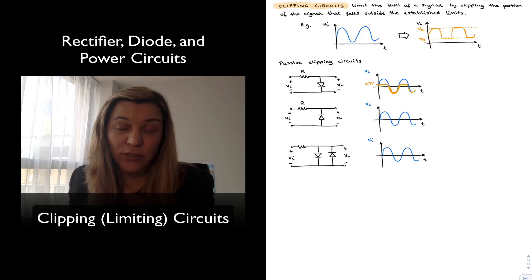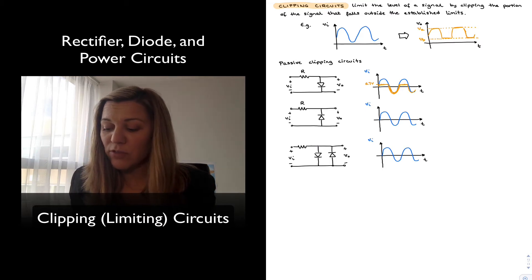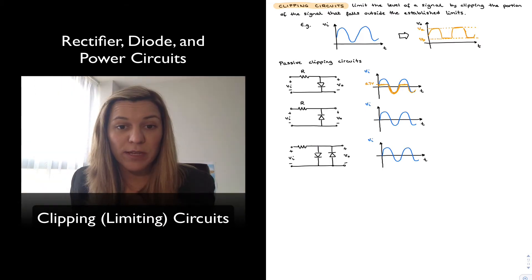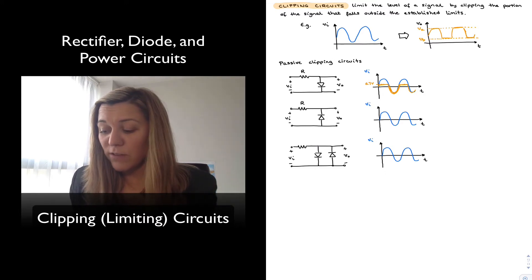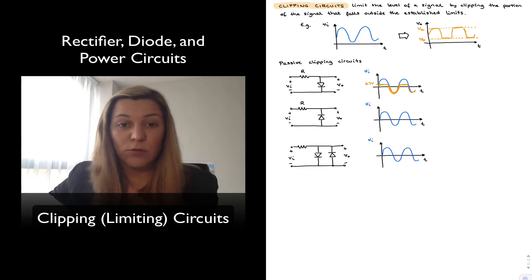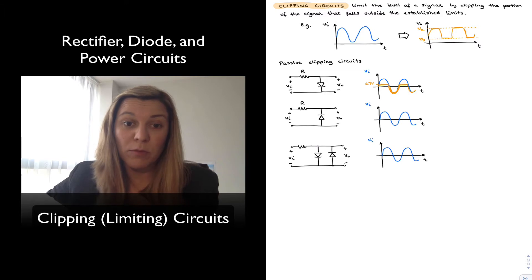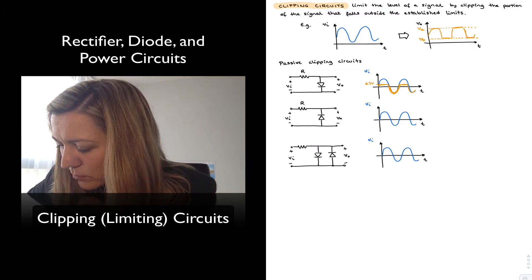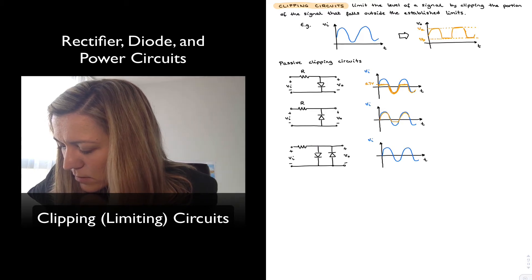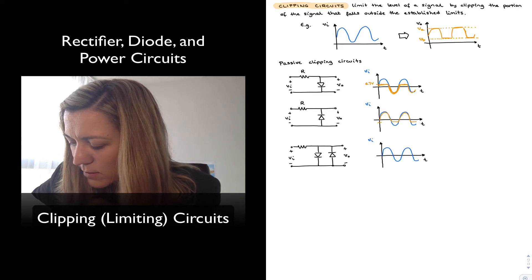If I reverse the orientation of the diode, the opposite thing happens. For positive values of VIN, the diode is reverse biased, so VIN gets transferred to VOUT. For negative values of VIN, the diode turns on and the minimum voltage across VOUT becomes negative 0.7 volts — so clipping at negative 0.7 volts.